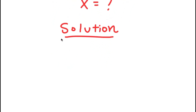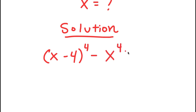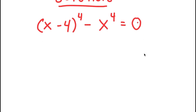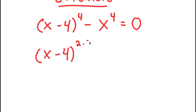If I do that, I get (x − 4) to the power of 4 minus x to the power of 4 is equal to 0. From here, I can rewrite (x − 4) to the power of 4 as (x − 4) to the power of 2 times 2, and I can do the same thing with x to the power of 4, giving x to the power of 2 times 2.